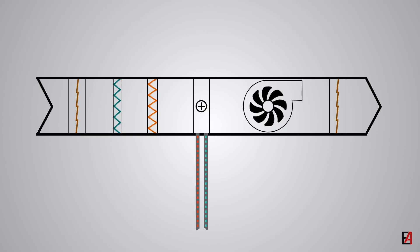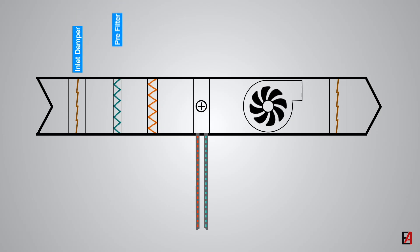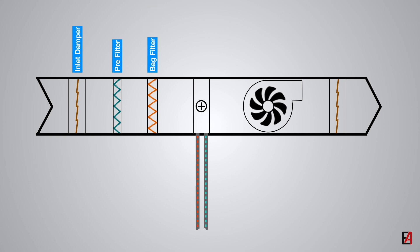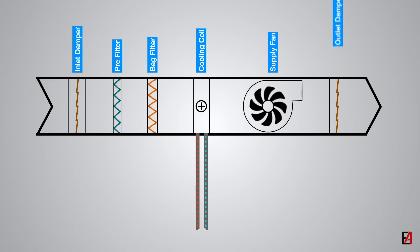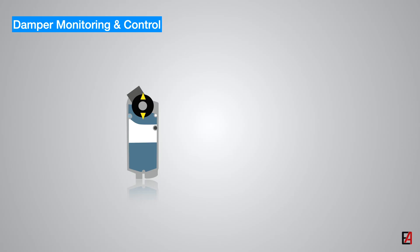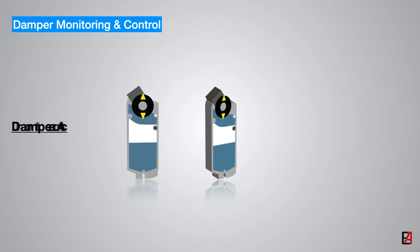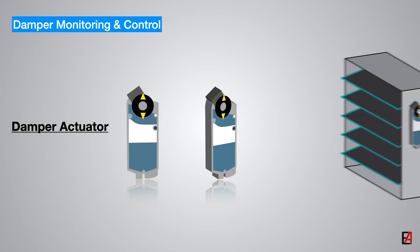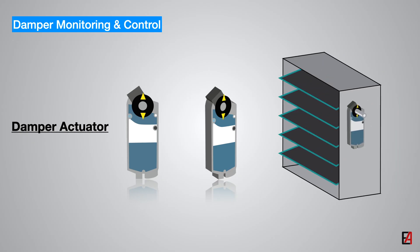In this simple AAHU, we have the following components: inlet damper, pre-filter, bag filter, cooling coil with chilled water, supply fan, and outlet damper. First, let's look into damper monitoring and control. To control and monitor the damper positions through BMS, motorized actuators are provided with the dampers. These are equipped with motors to rotate the damper shaft, which will result in opening or closing the damper blades.